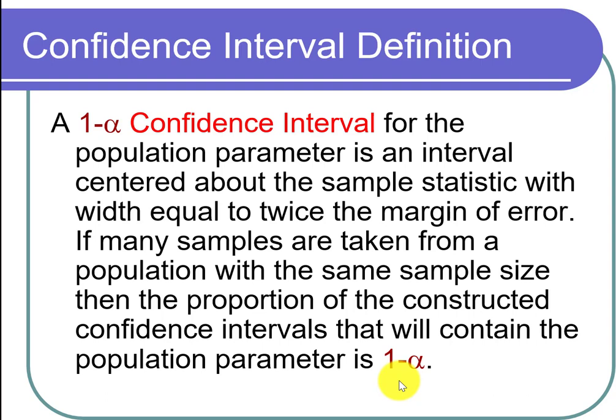The idea is: suppose you're in the business of publishing news articles based on research. Sometimes those articles won't be right because they use a sample, but most of the time they better be right. What you feel comfortable with as the probability of being right is the confidence level — 1 minus alpha.